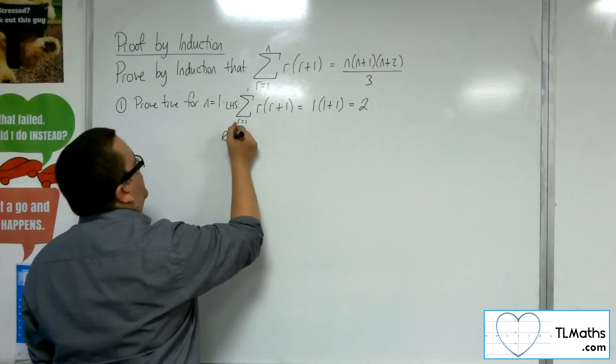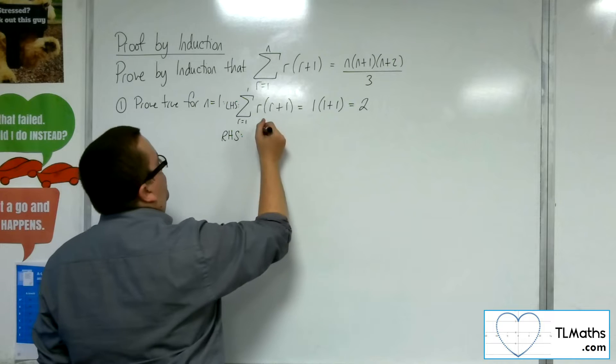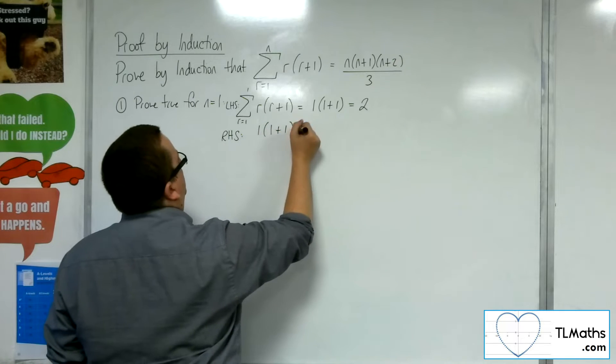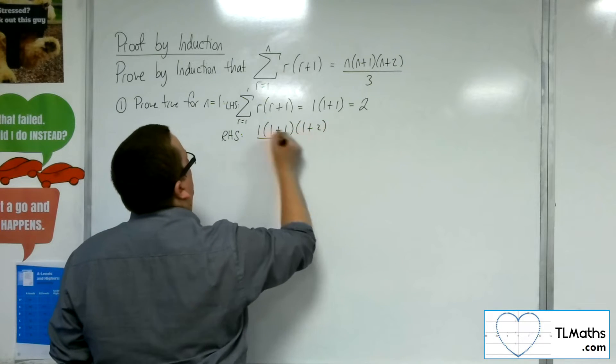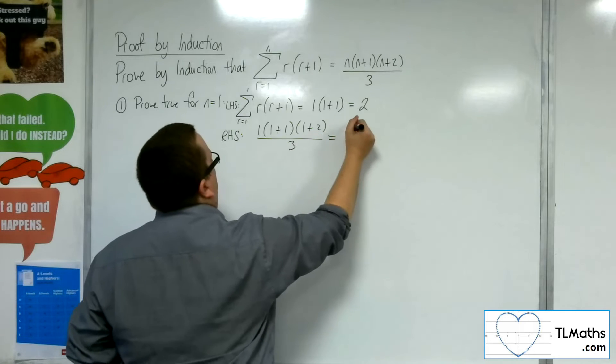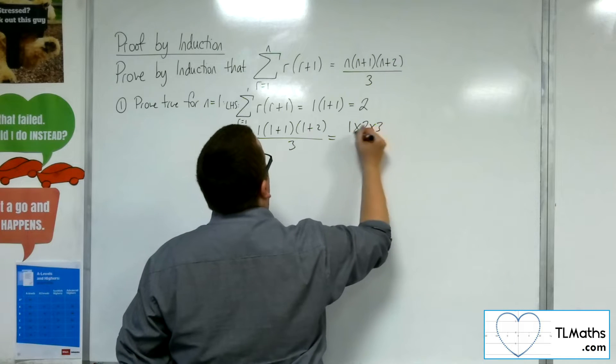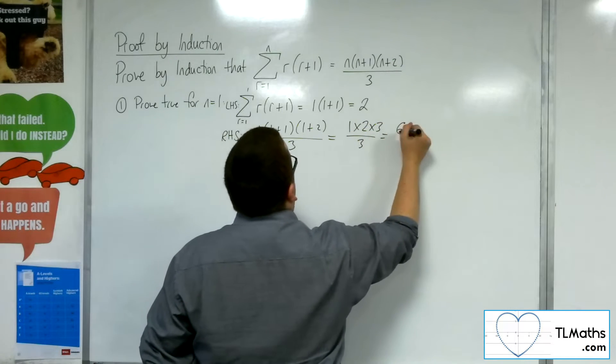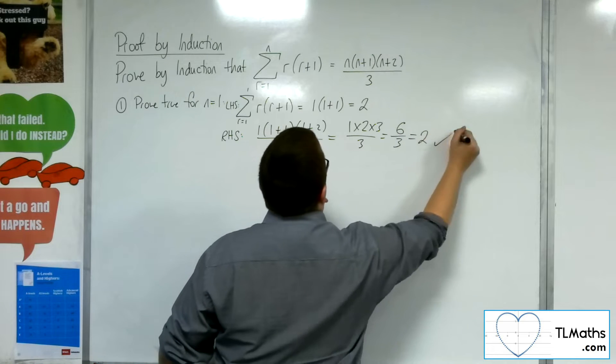And the right hand side, we would have 1 times 1 plus 1 times 1 plus 2 over 3. So that's 1 times 2 times 3 over 3, which is 6 over 3, which is 2.